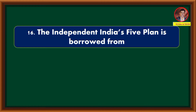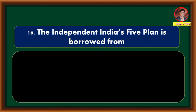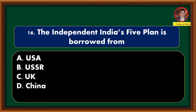The independent India's five-year plan is borrowed from — USA, USSR, UK, China. Correct answer is option B: USSR.